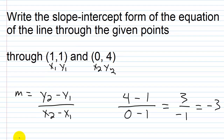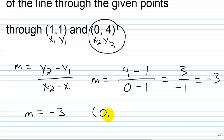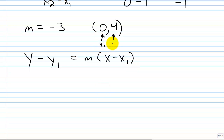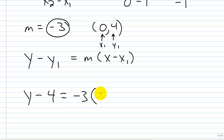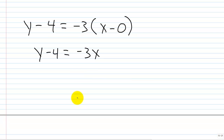Now that we have m equals negative 3, we can take either point — it doesn't matter because we'll get the same answer. I'll take 0 comma 4. Using point-slope form, y minus y₁ equals m times the quantity x minus x₁, with x₁ = 0 and y₁ = 4, we get: y minus 4 equals negative 3 times the quantity x minus 0. Negative 3 times x is negative 3x, and negative 3 times 0 is 0, so we get y minus 4 equals negative 3x.